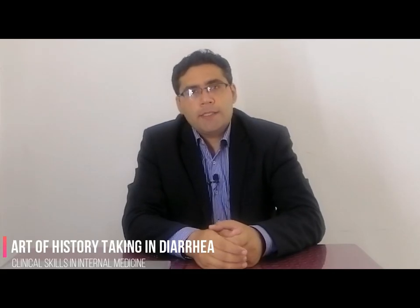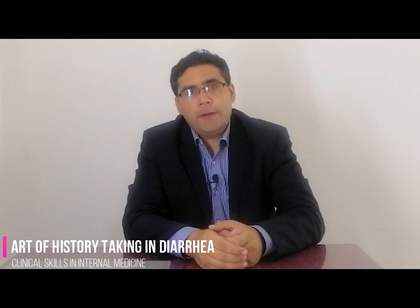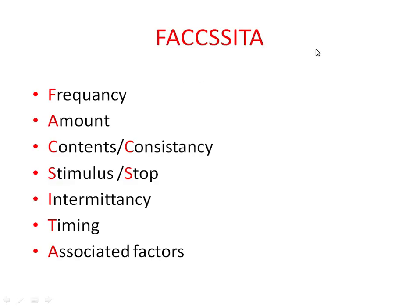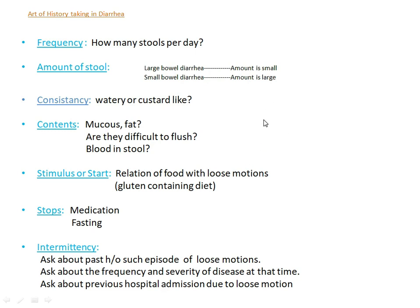Whenever a case of diarrhea comes in exams, I suggest you use this formula. By using this, you can cover a lot of questions in diarrhea. F is for frequency, A for amount, C for contents and consistency of loose motions, S for stimulus — that is, what are the reasons or causes of these loose motions — and S for stop, how they are stopped, I for intermittency, T for timing of loose motion, and A for associated factors along with loose motions. Now we will discuss this in detail.